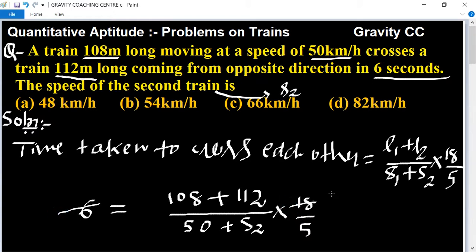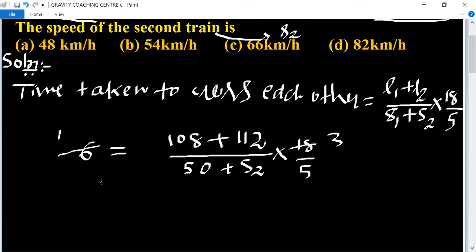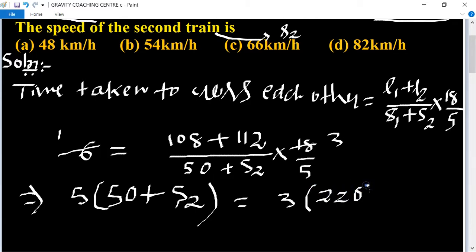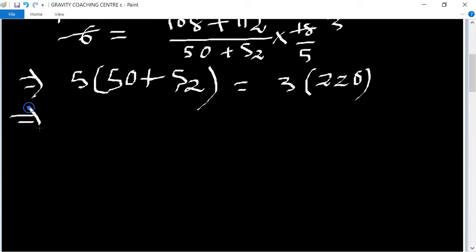Plus the speed of the second train S2 into 18 upon 5. So 3 upon 5 equals 108 plus 112 upon 50 plus S2 into 18 upon 5.